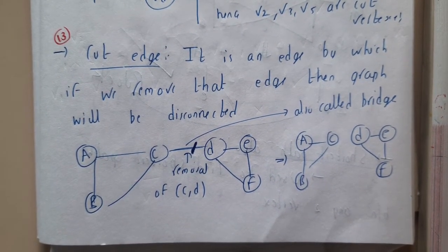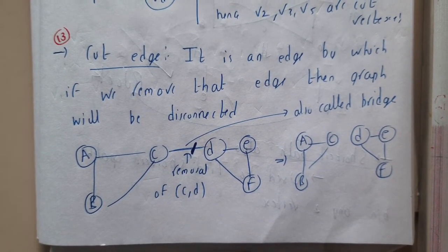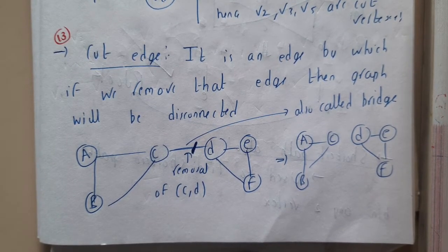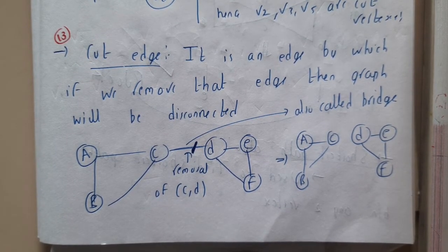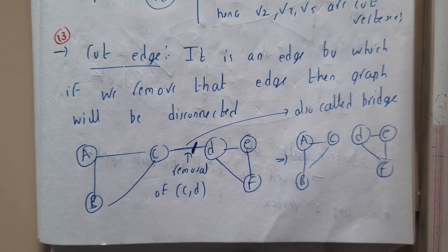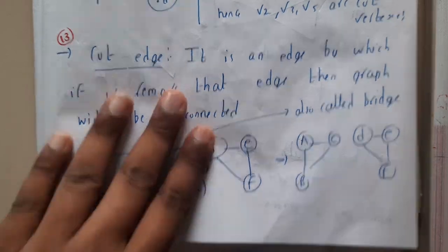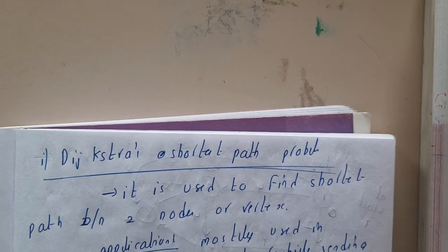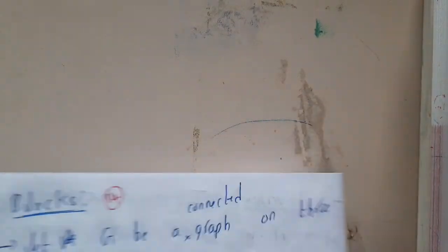So bridge is nothing but the same thing - a particular edge which is connecting two different graphs is nothing but a bridge. Okay, so I hope everyone got a clear idea about a bridge.